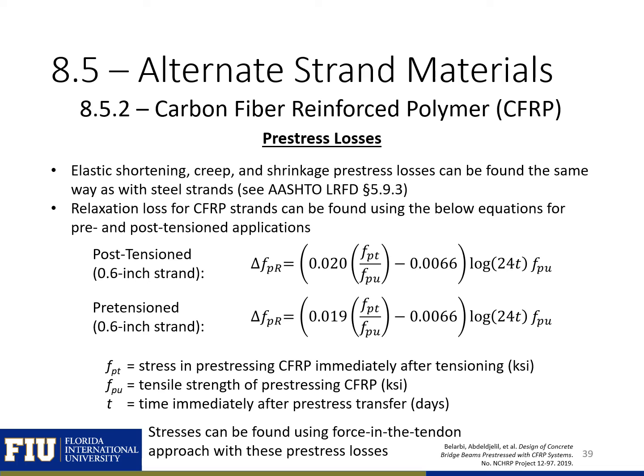In terms of pre-stress losses with CFRP, the researchers found that elastic shortening, creep, and shrinkage losses can be found the same way as with steel strands — using AASHTO LRFD or the PCI design handbook approach. For relaxation loss, they propose two equations for post-tensioned and pre-tensioned strands.